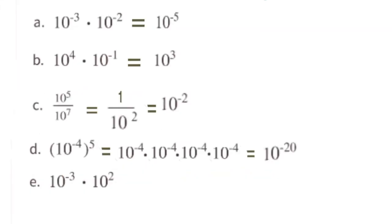Part E: 10 to the power of negative 3 times 10 to the power of positive 2. Since they share a common base of 10, we add their exponents: negative 3 plus positive 2 equals negative 1. Written as a single power of 10, this is 10 to the power of negative 1.